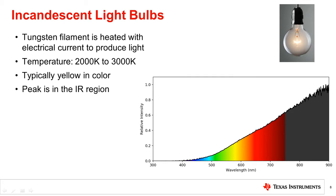Household incandescent light bulbs consist of a tungsten filament in an inert gas. Electrical current is passed through the filament, which heats to a typical temperature between 2,000 and 3,000 degrees Kelvin. Similar to the sun, the heated filament radiates a spectrum of different wavelengths, including visible light, as seen in the spectral plot on the right.